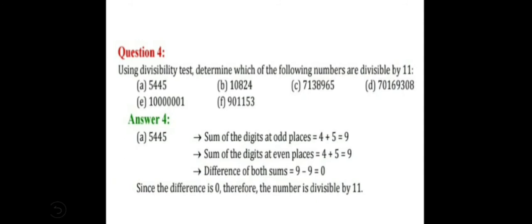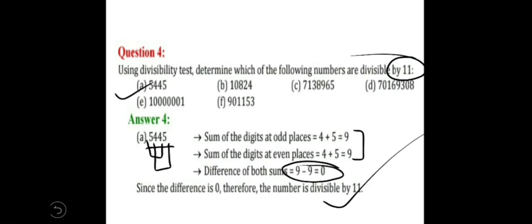Now let's check divisibility by 11 for these numbers. The divisibility rule for 11 states: find the sum of digits at odd places and the sum of digits at even places — even places are the 2nd, 4th, 6th, 8th positions, and odd places are the 1st, 3rd, 5th, 7th, and so on. If the difference between these two sums is 0 or a multiple of 11, the number is divisible by 11. For the number 5445: odd places give 5 plus 4 = 9; even places give 4 plus 5 = 9. The difference is 0, so this number is divisible by 11.